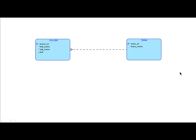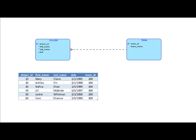Let's loop back to the tables we had looked at earlier. This is what our players table looked like. Our table had several attributes — here we are looking at just player ID, first name, last name, and date of birth. But we also saw that it had an attribute called team ID, which indicated the team to which a player belonged.